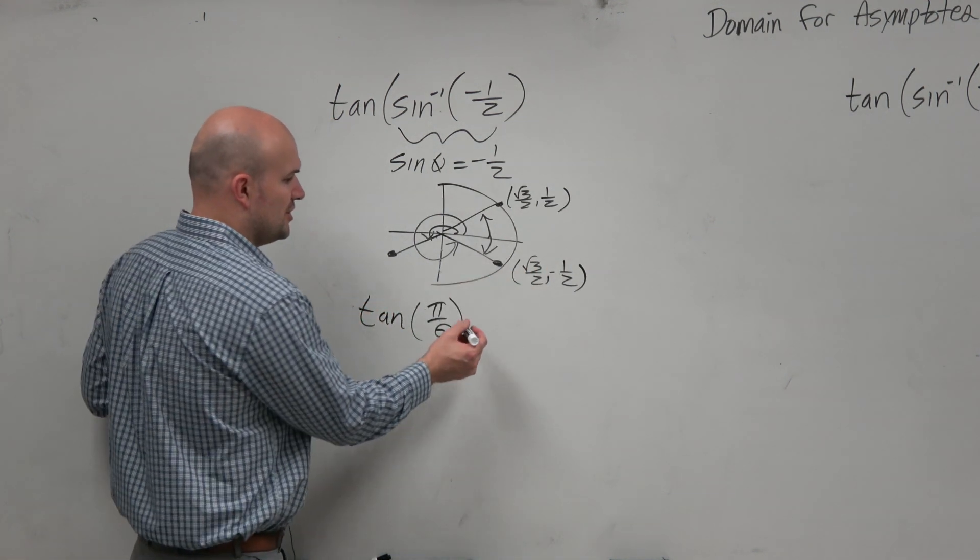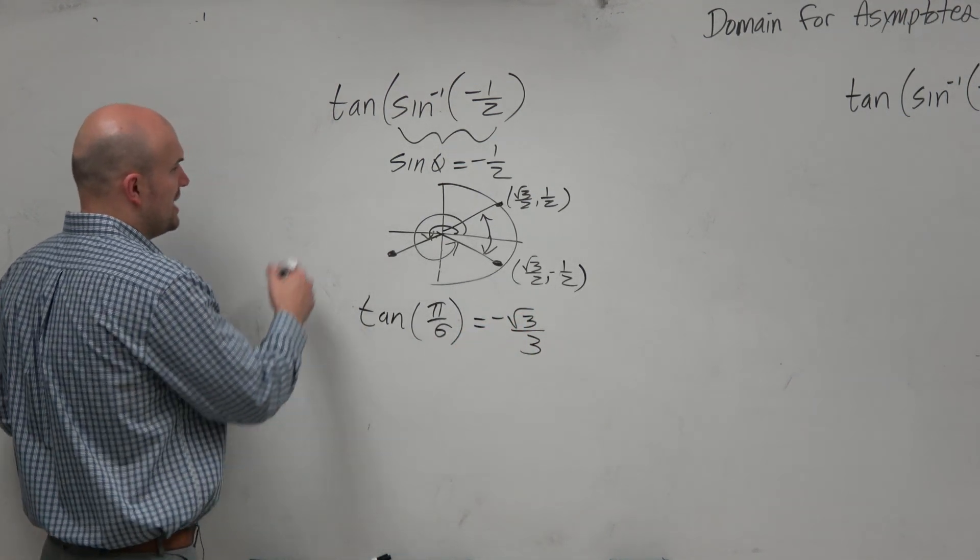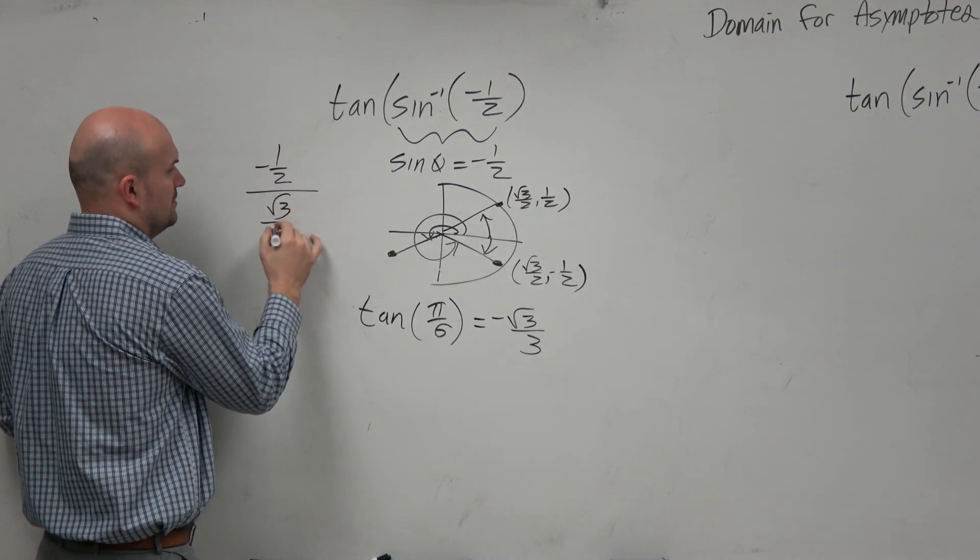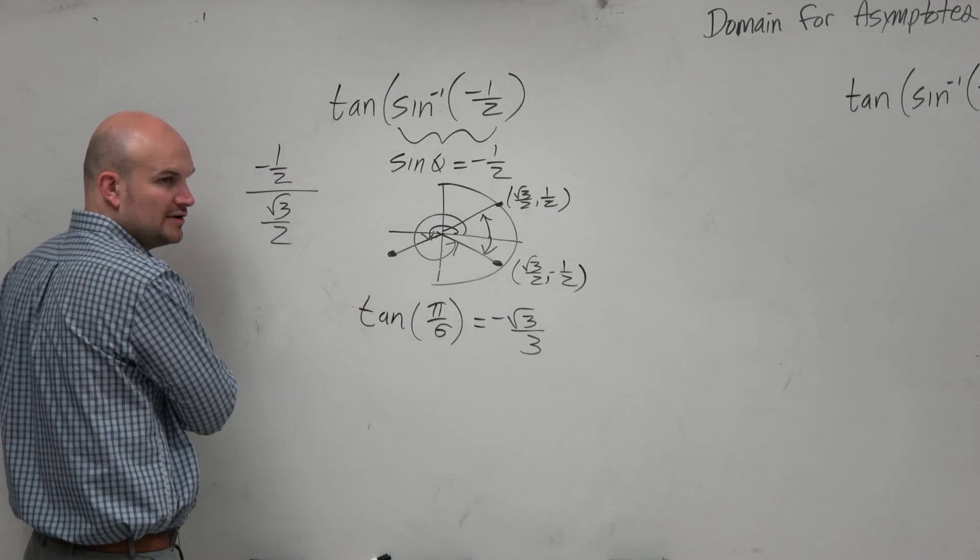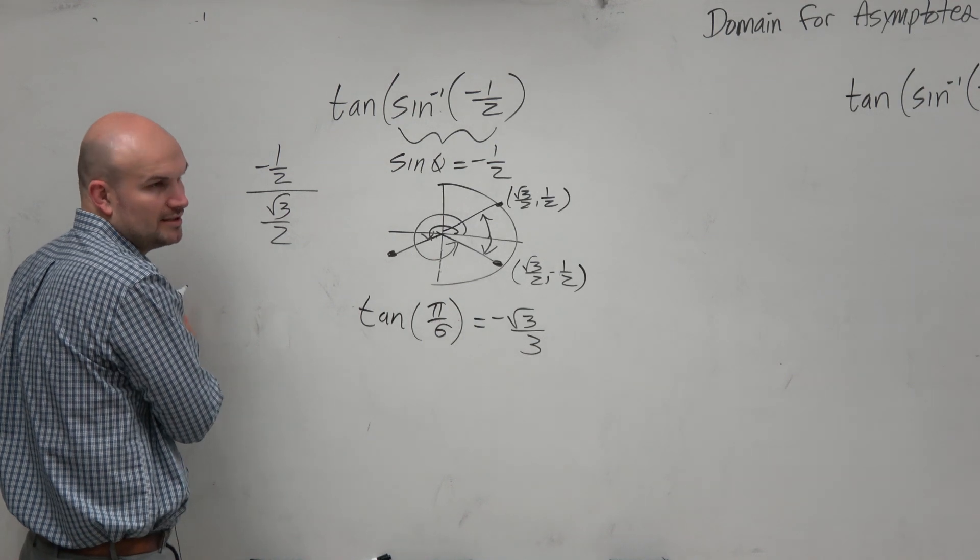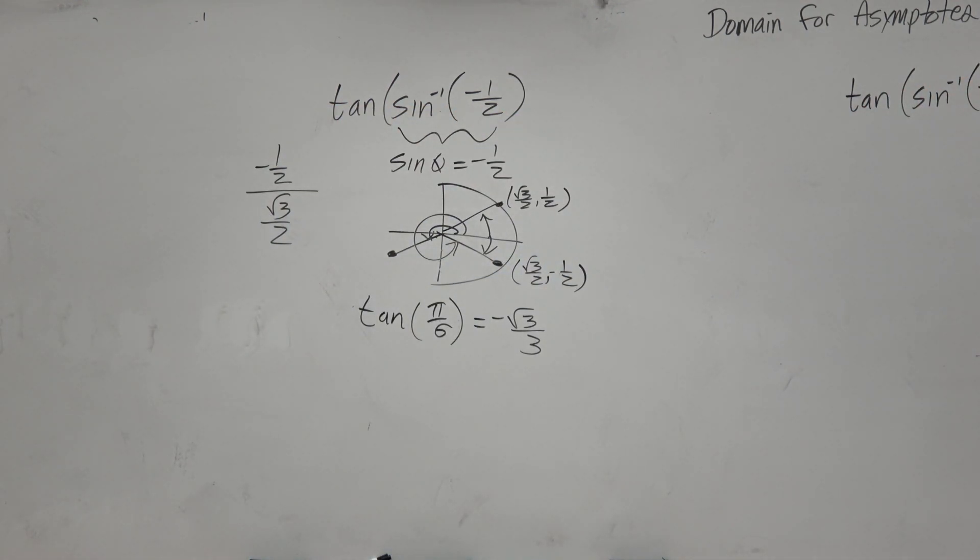You should know this simplified: negative square root of 3 over 3. If you need to work it out, multiply by the reciprocal, rationalize the denominator, you get negative square root of 3 over 3. We've covered that multiple times, so that should make sense.